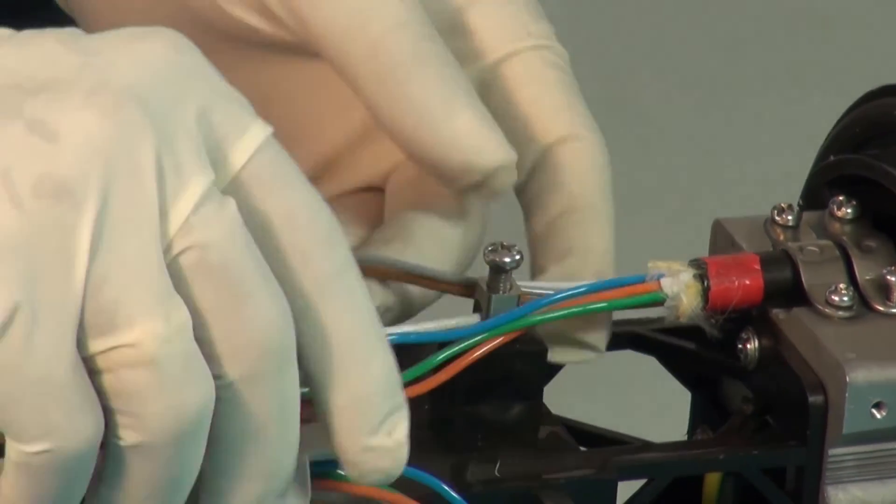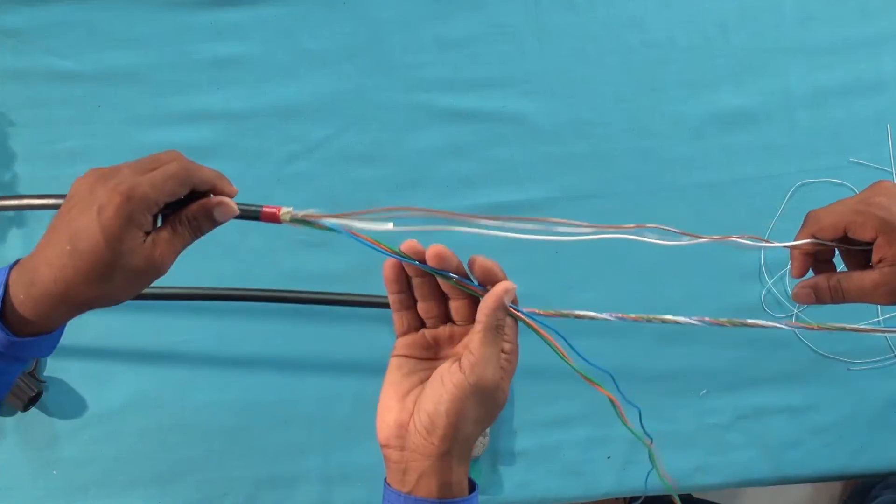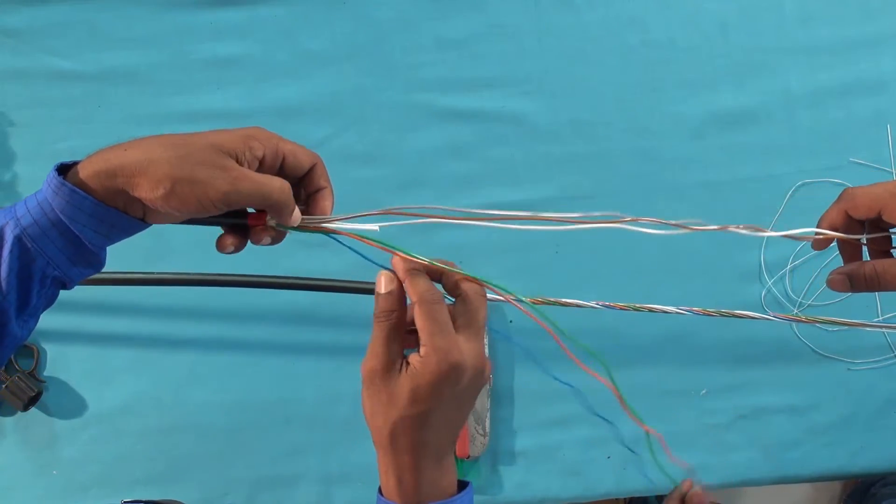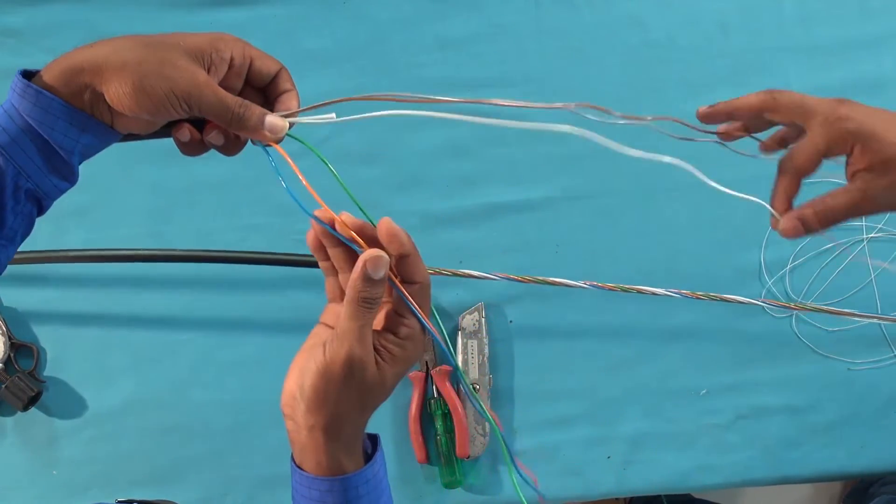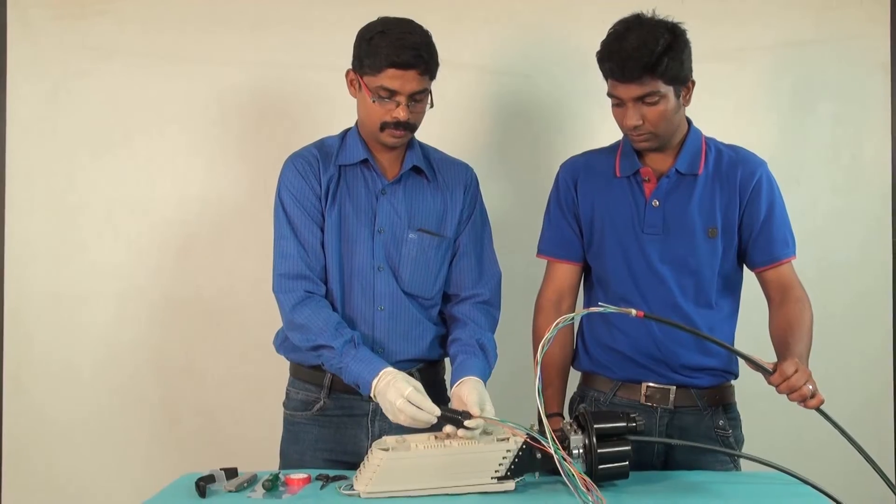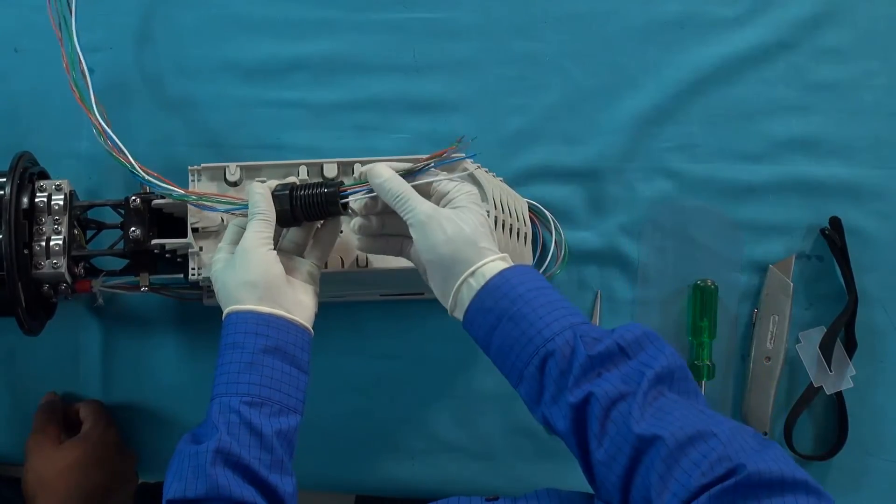This portion will be tightened to a clamp inside the closure. The optical fiber loose tubes inside the cable have standard color coding. Now we have the loose fiber prepared and ready to be routed inside a joint closure.